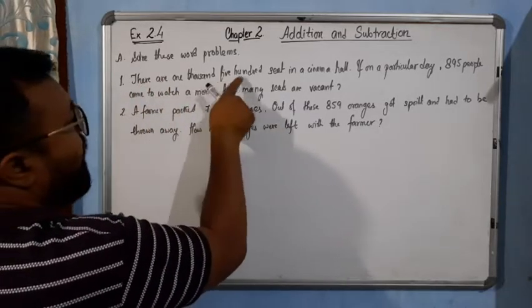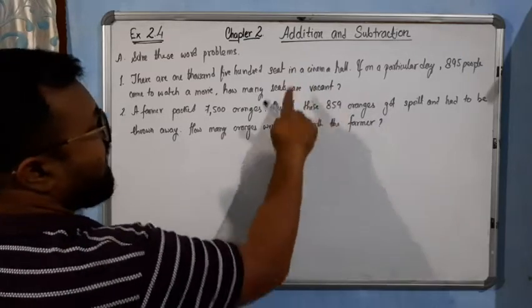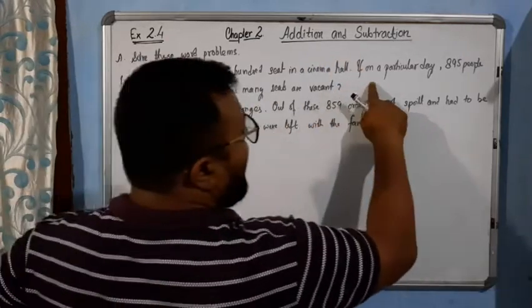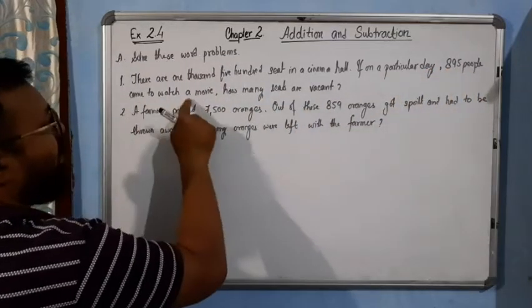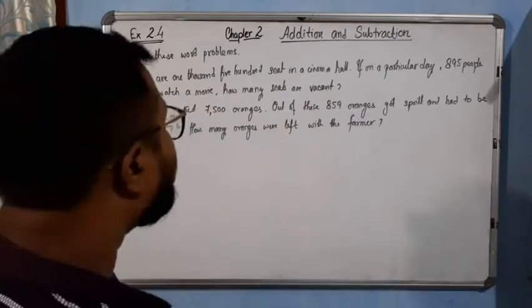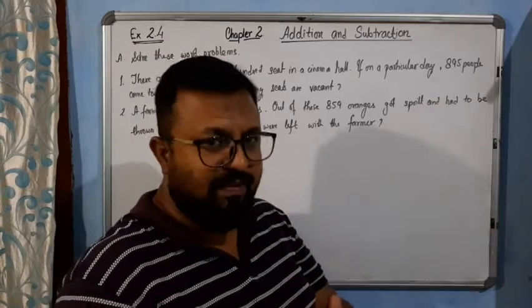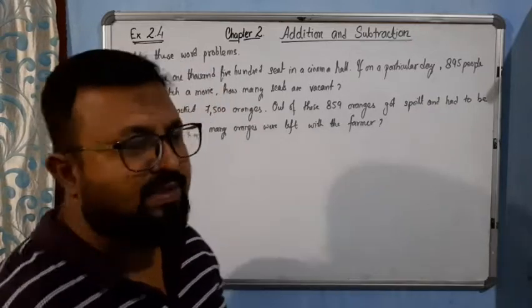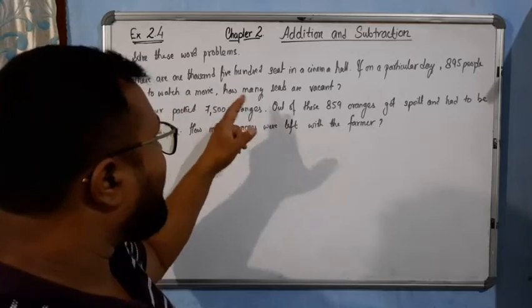There are 1500 seats in a cinema hall. If on a particular day 895 people came to watch a movie, how many seats are vacant? Very simple. Out of 1500, only 895 seats were filled up, so the rest are blank. So simply we will do subtraction to find out the number of vacant seats.